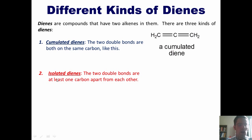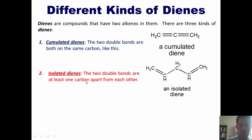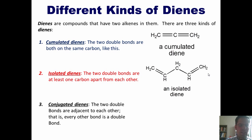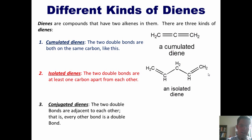The second type is isolated dienes — molecules in which the two double bonds are at least one carbon apart from each other. Here's an example of an isolated diene. The two alkenes are at least one carbon apart from each other. If there were more carbons or other atoms between the two alkenes, it would also be an isolated diene.